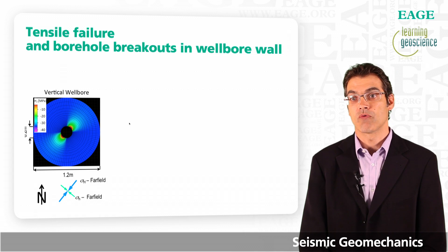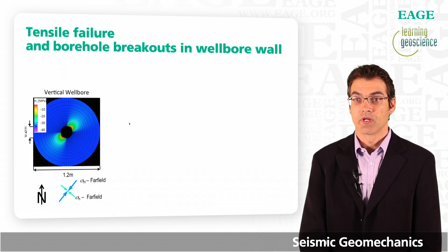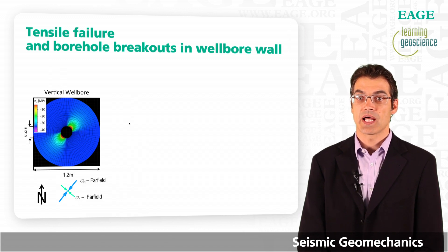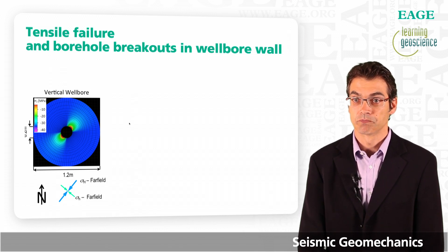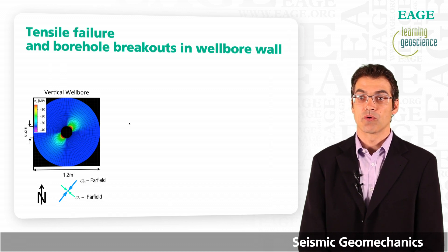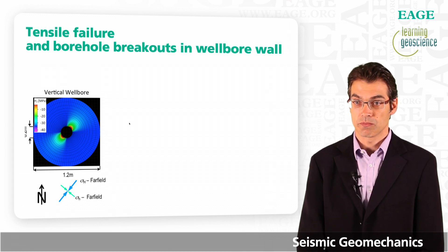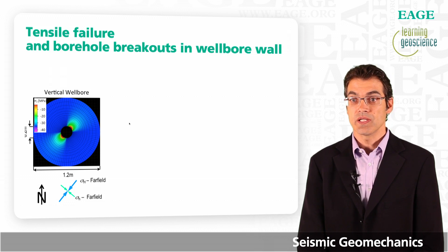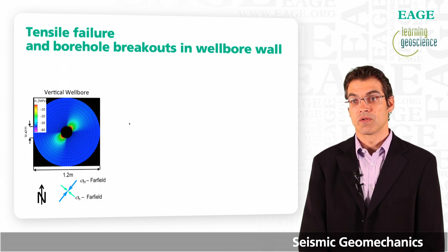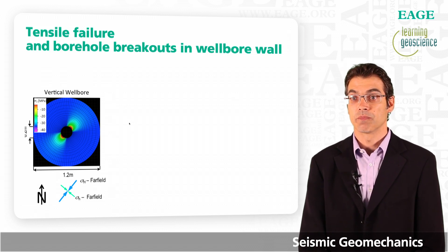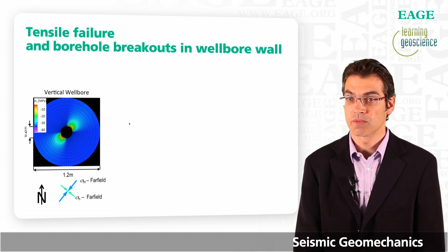What you can see on the left side of the slide is a finite element near-wellbore model of a vertical well. The dark black circle in the center represents the wellbore with a diameter of 20 cm, and color coded around it are computed stresses. I am color coding here the intermediate principal stress. As you can see, in directions aligned north, east, south, west, there are red anomalies indicating a low intermediate principal stress.